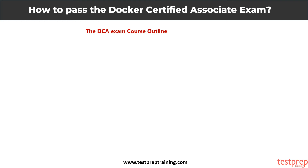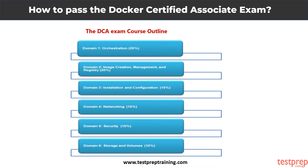The course outline will help you understand all the important topics covered in the Docker Certified Associate exam, and will prove beneficial for all candidates in order to qualify. There are a total of six domains. The first domain is orchestration, covering the majority share with 25% of questions. This is followed by image creation, management, and registry at 20%. Next come networking, security, installation and configuration at 15% each. The last module, storage and volumes, covers a 10% share.